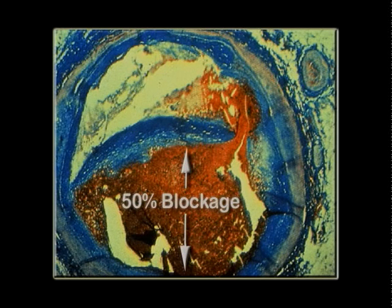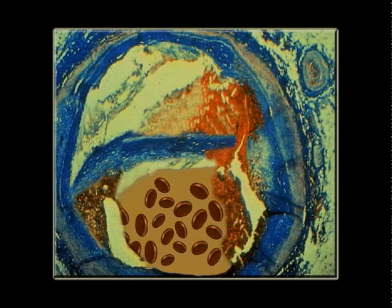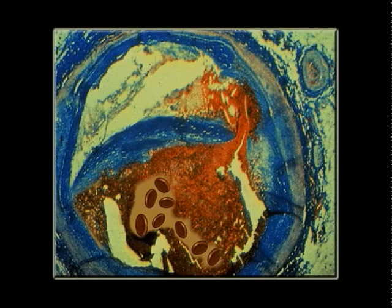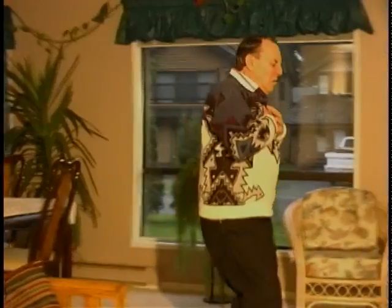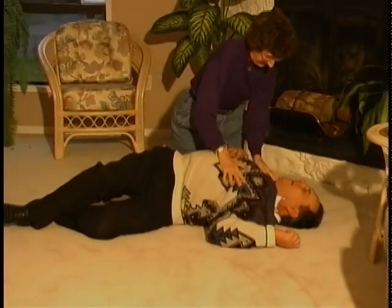This plaque was only blocking the artery by about 50 percent — not enough to cause any symptoms at all. One day, without warning, the plaque suddenly ruptured. Its contents spilled out and the plaque's calcified shell exploded against the side of the artery. The debris from the inside of the plaque stimulated a large clot to form. This person was probably well and without any symptoms such as angina until suddenly this small plaque ruptured, leading to death within minutes.